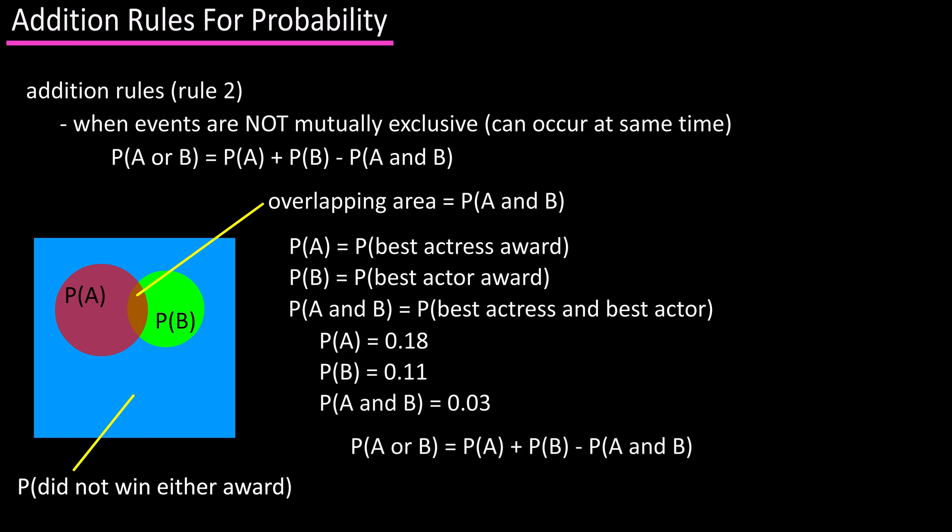Using our equation, we have the probability of A or B equals 0.18 plus 0.11 minus 0.03, which is 0.26, or a 26% probability of a movie that won best actress or best actor.